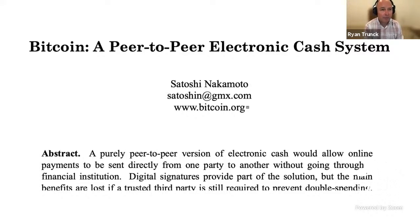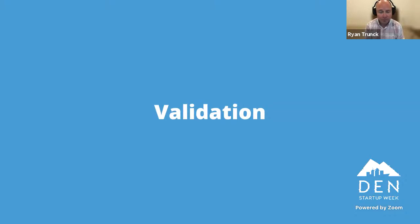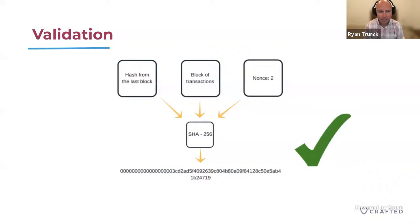A bank could basically shut your bank account down if they thought you were up to something fraudulent, or if you overdrafted. Bitcoin solves that — it's impossible for them to do that because it's a distributed peer-to-peer network. Think about it like the old days of file sharing: there was no central authority, so it was really hard to take down decentralized peer-to-peer networks. Bitcoin does the same thing for electronic cash. So we don't have a central authority keeping the ledger and everyone's balance — and hopefully keeping it secure, though that's not always the case.